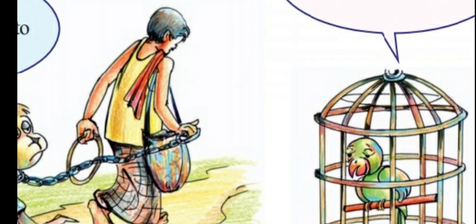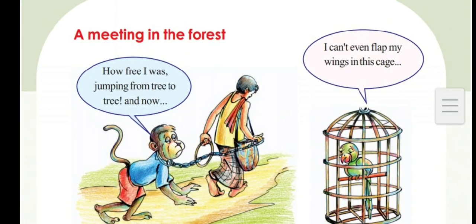This parrot is in a cage. She is saying, 'I can't even flap my wings in this cage.' It is a small cage. A parrot is under a crib, eating fruit.